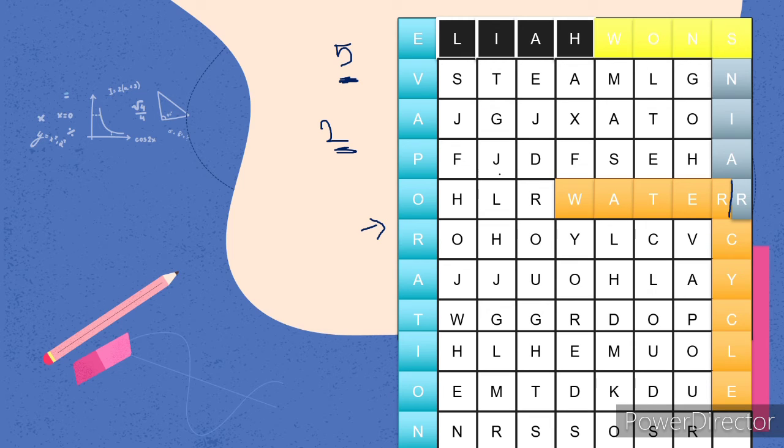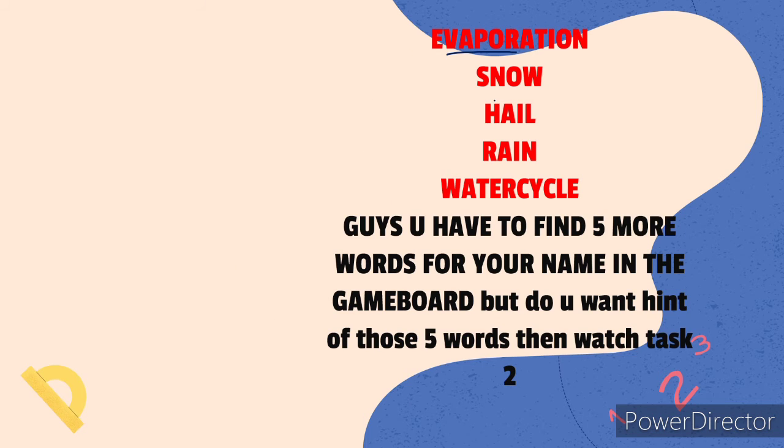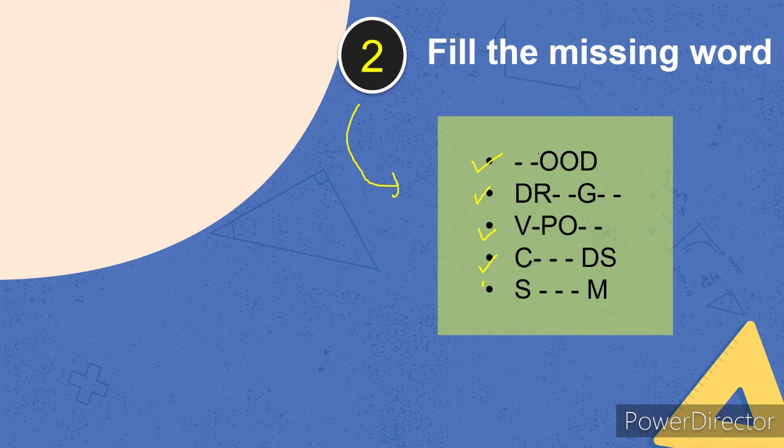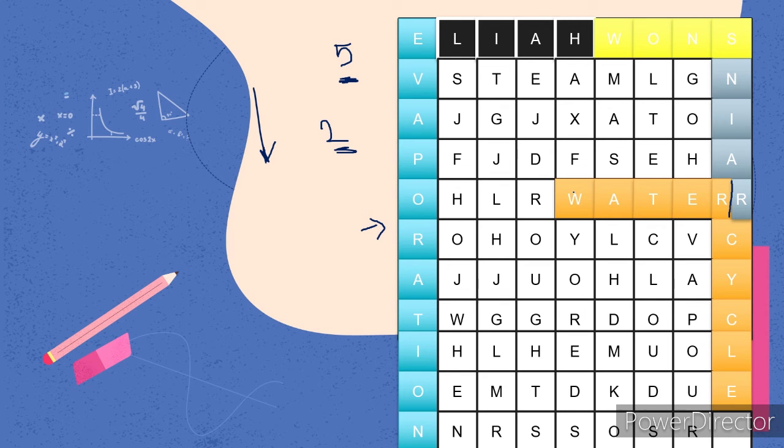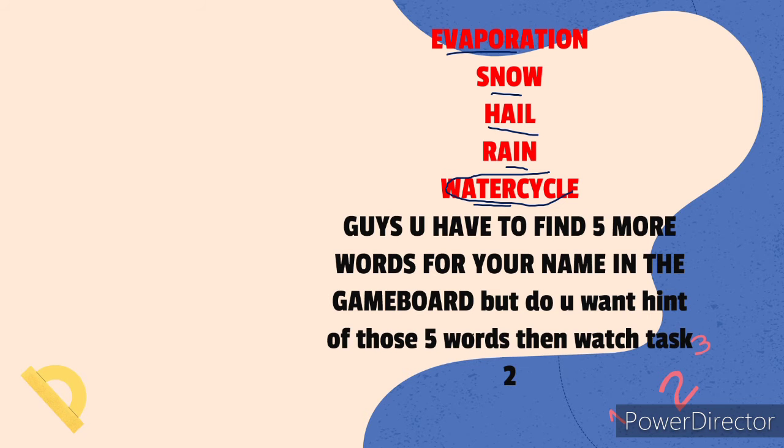So you can find words and write them in the comment section: evaporation, snow, hail, rain, and water cycle. Now the water cycle word was totally tilted, so it is possible that the 5 words you're looking for are also in this tilted format.